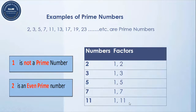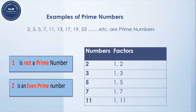Now in this list of numbers, there is no one. Why? Because one is not a prime number. One is having only one factor, which is one itself. So the number which is having only two factors — one and itself — is called a prime number. So one is not a prime number.